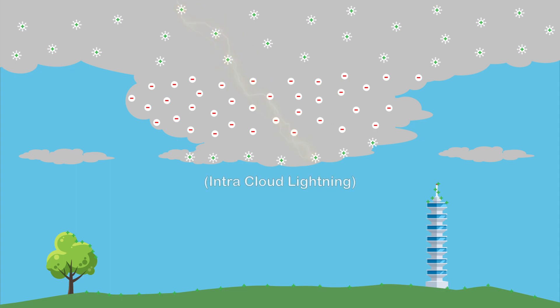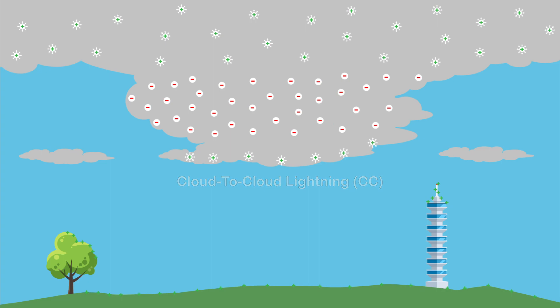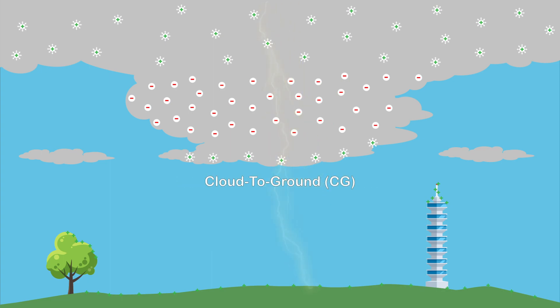Meanwhile, lightning can occur between opposite charges within the storm cloud, or between opposite charges in the cloud and on the ground. Cloud-to-ground lightning flashes account for only 25% of total lightning flashes worldwide.